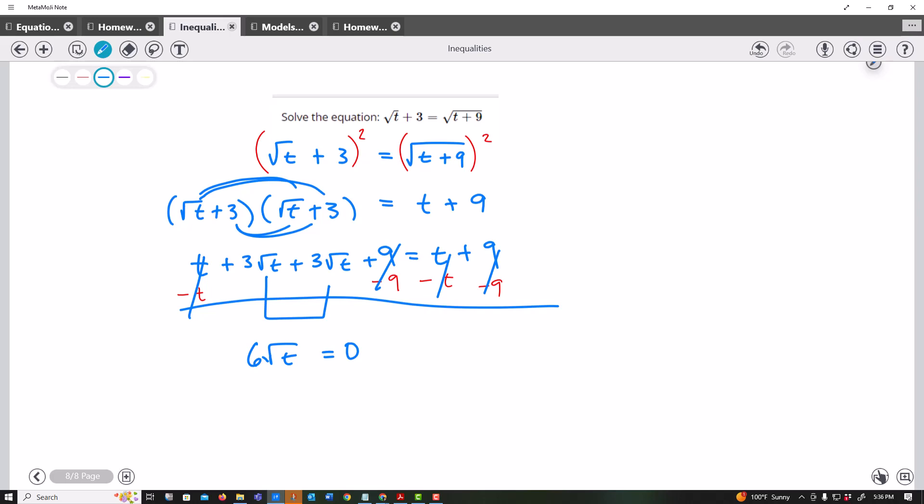And then I can already see the answer t has to be 0. But to properly work this out, we would make it a little bit easier on ourselves. Let's divide both sides by 6, so we get 0. Then we square, and we simply get t equals 0.